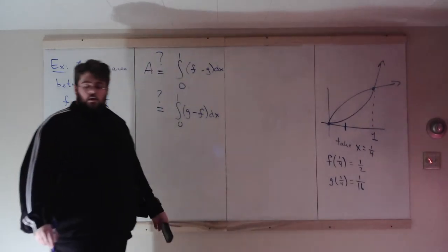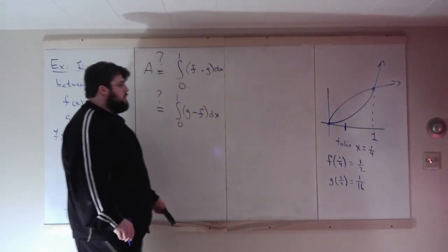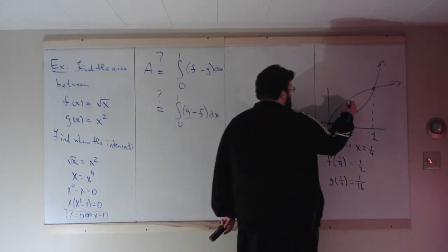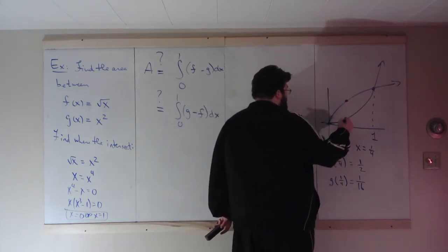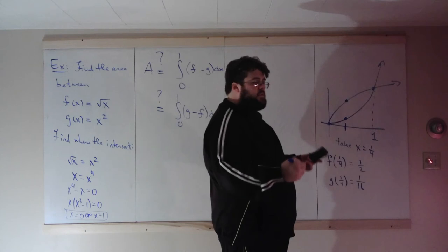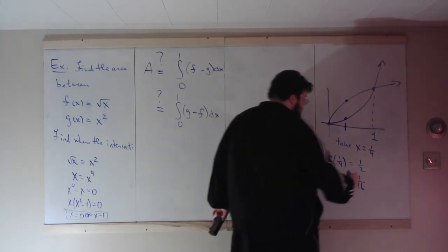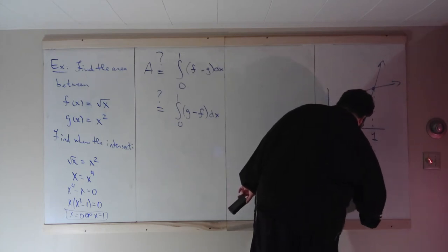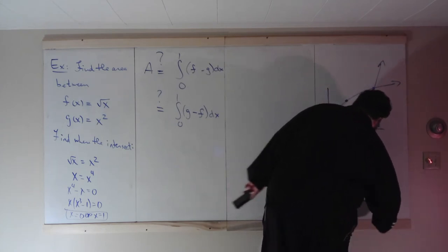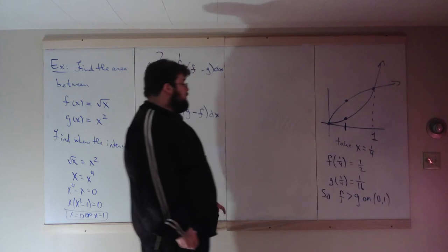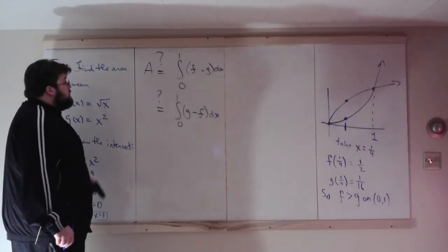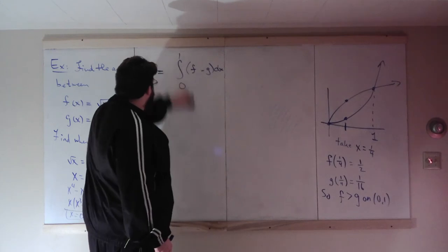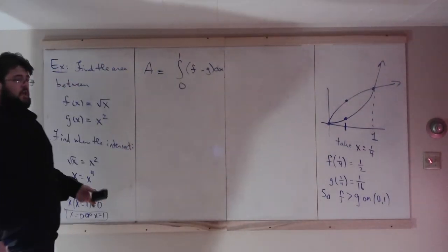This tells you all you need to know about these two functions. F of a quarter is a half, G of a quarter is a 16th. A half is larger than a 16th, so this tells us F is larger than G on the interval we're considering, 0 to 1, which tells us this computation will give us the area.